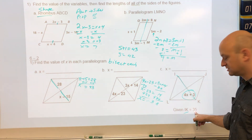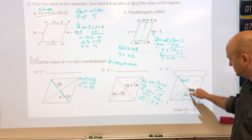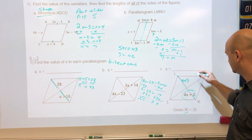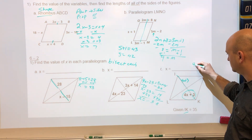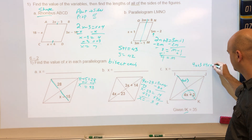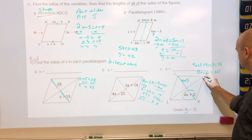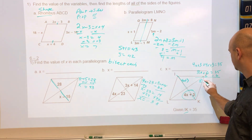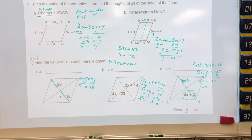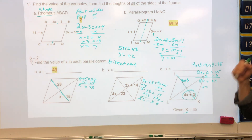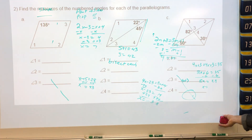IK is the entire diagonal and this is half of it. We can either divide IK by 2 or double the half. I prefer to double the half to avoid decimals, so the two halves add up to equal the whole diagonal. Combining like terms and moving numbers gives approximately 3.625 as the answer.